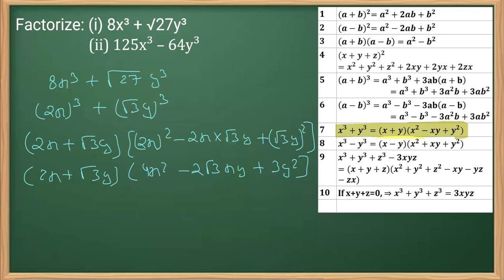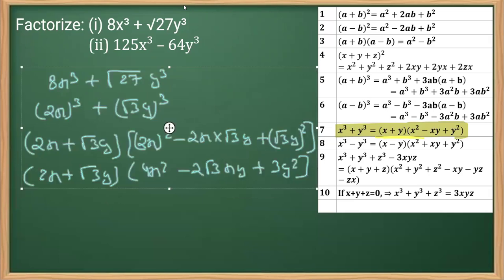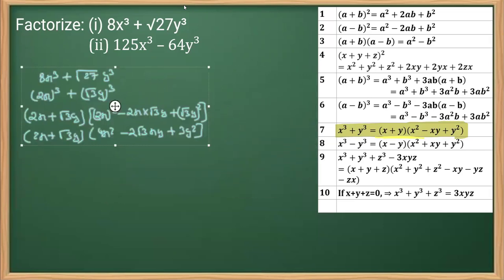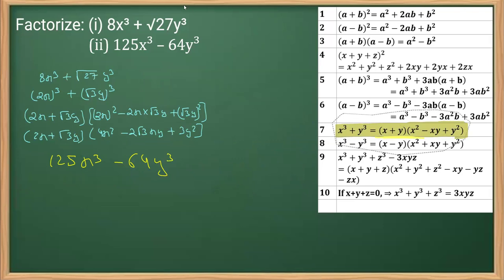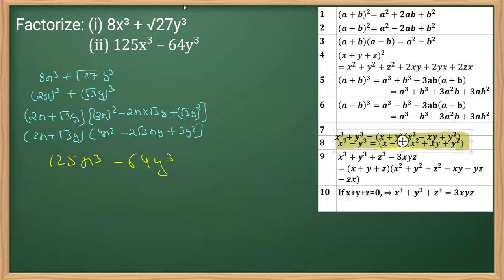Now let's see how the second part can be done, which is again based on the same identity. Now in the second part we have this as 125x³ and then 64y³. Now this one is based on the identity that is x minus y, right?